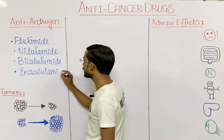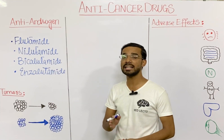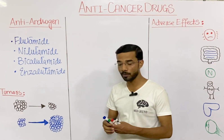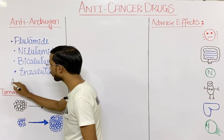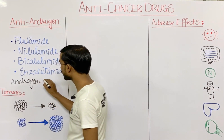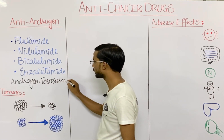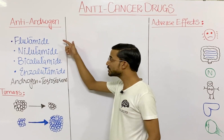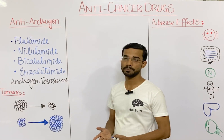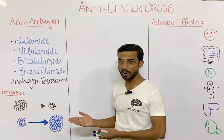These are four most important anti-androgen drugs. Androgen is basically a hormone. The most important androgen hormone is testosterone. These drugs actually work against the androgen, that is why these are called anti-androgen drugs.